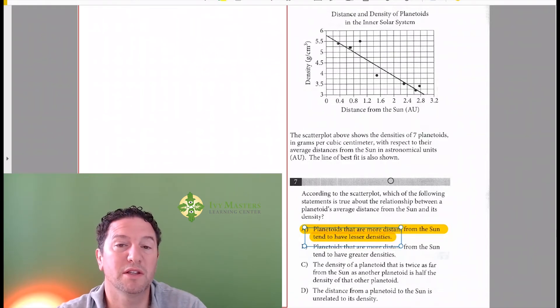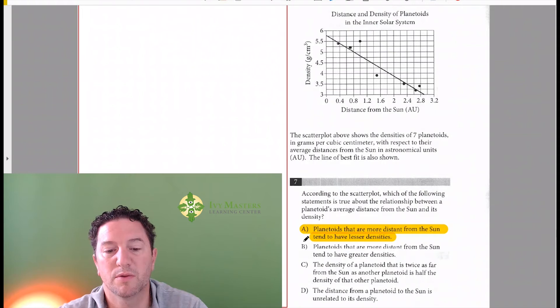Now let's look at the others and see why they're wrong. Answer choice B: Planetoids that are more distant from the sun tend to have greater densities. The higher the distance is over here, notice the density is lowest there. So that's why it's not B.